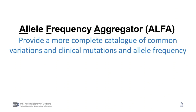The goal of the alpha project is to improve our understanding of human sequence variation by providing a more complete catalog of common and clinical variation, including mutations and their allele frequency, to facilitate variant research and interpretation.